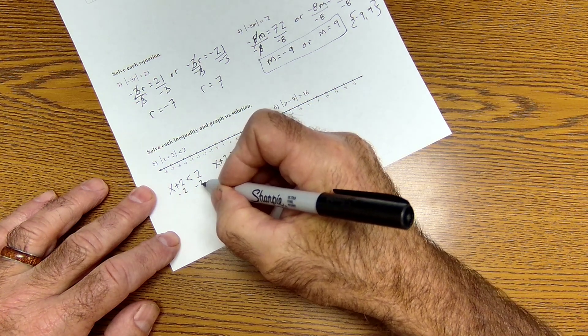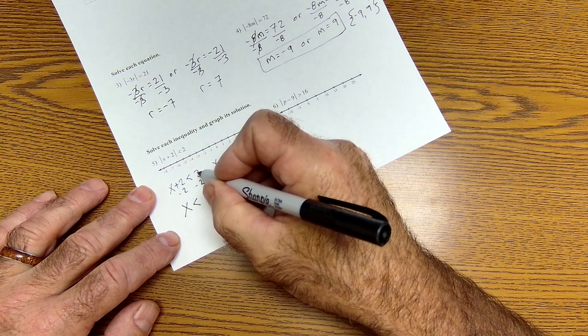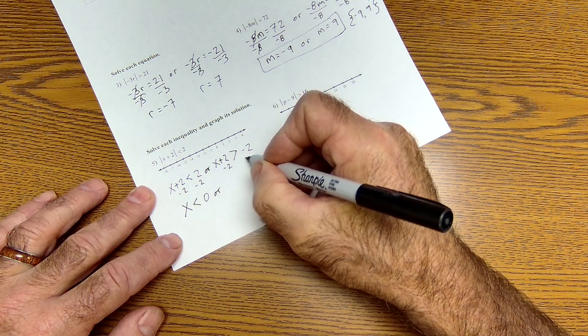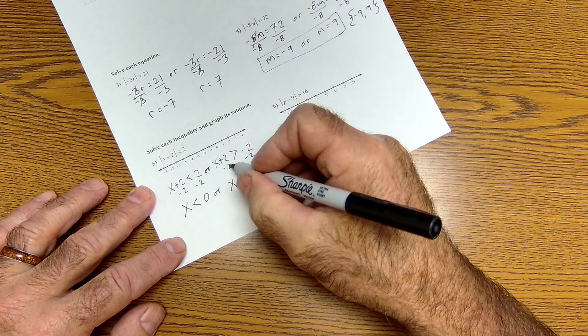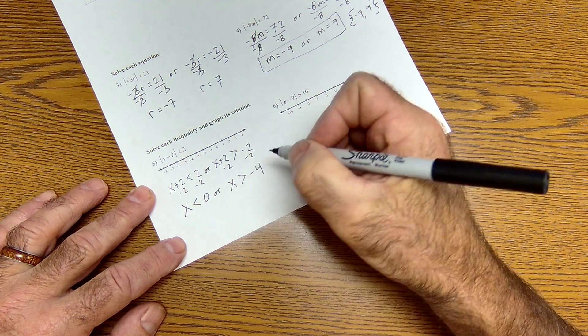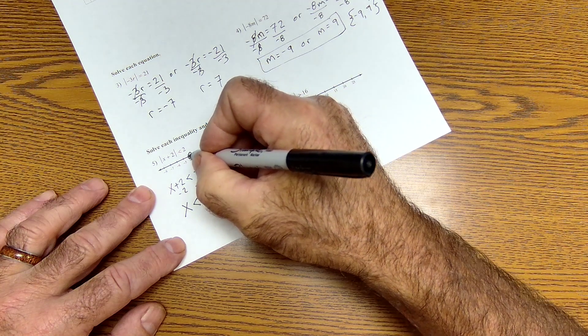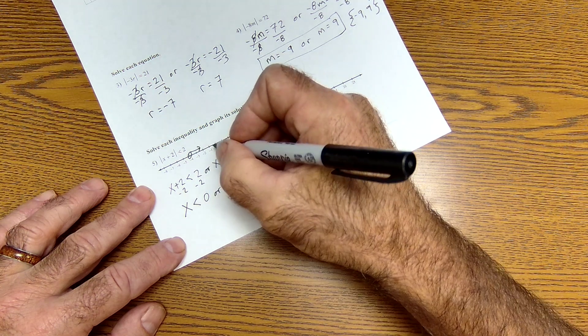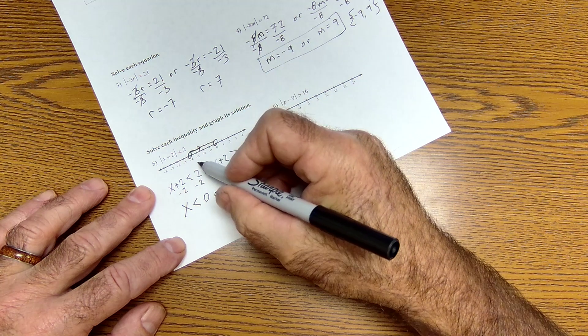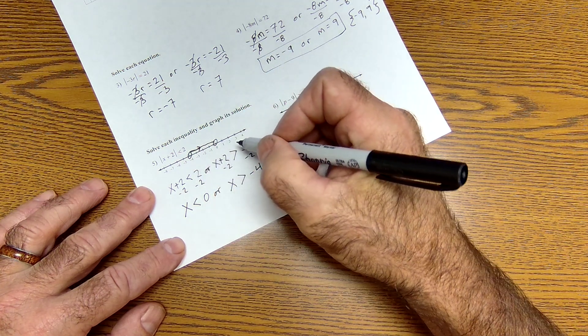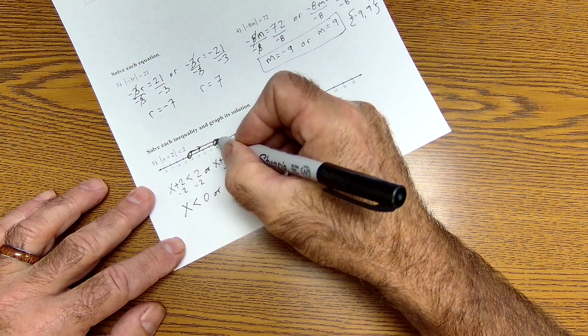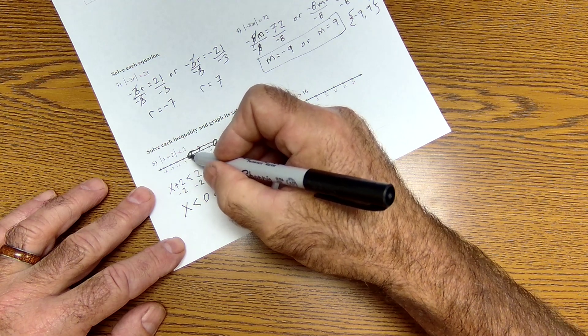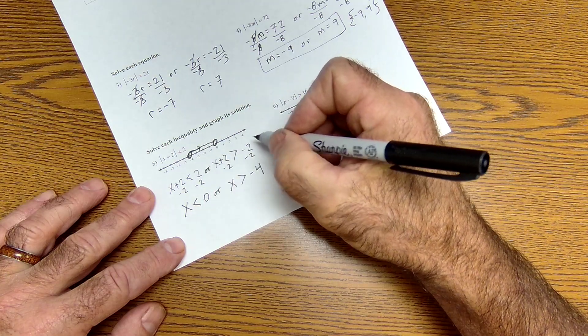I solve an inequality the same way as I solve an equation. With the one exception, if I multiply or divide by a negative, I flip that sign. And that's why that thing got flipped. Subtract 2 from both sides. And I'm going to have x by itself is less than 2 minus 2, 0. Or subtract 2 from both sides. x by itself is greater than 2 minus 2, negative 4. So I'm over here at a negative 4. It is greater than that. So it's got to go this way. x is less than 0, so it's got to go this way. So it's everything between negative 4 and 0. These open circles say it is not including negative 4 and 0.